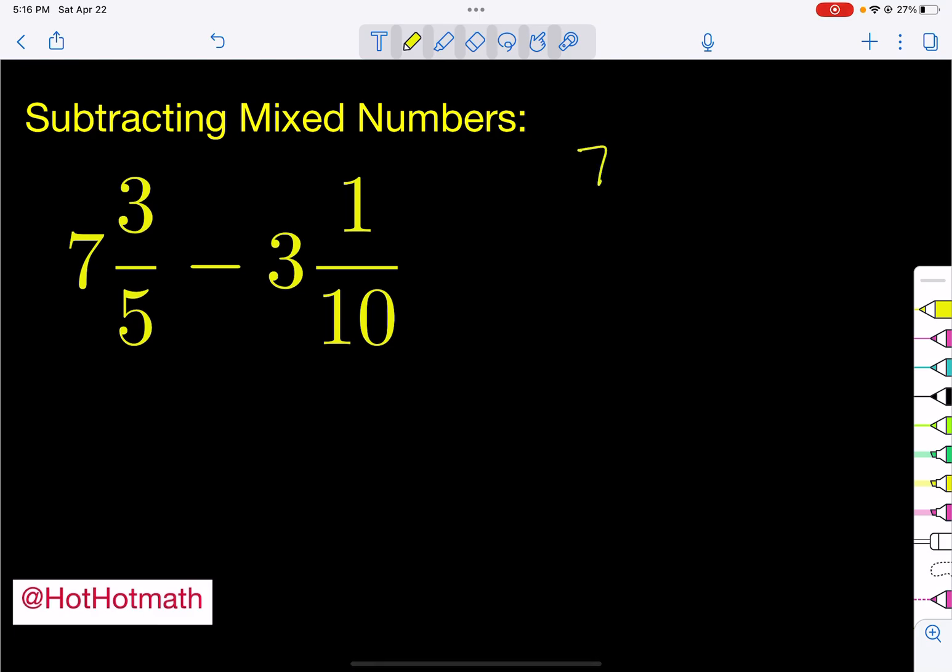So if we have 7 and 3 fifths minus 3 and 1 tenths. So there's some things we have to check for. The first thing we have to check for is do we have the same denominators in these two spots? We do not.